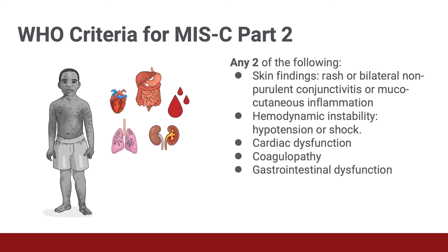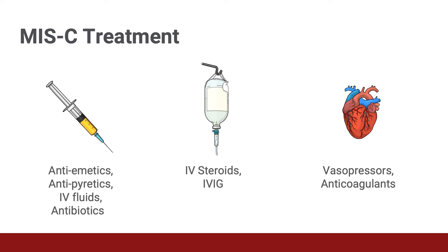Once diagnosed with MIS-C, patients should be hospitalized. Remember that MIS-C and COVID can mimic other common infections in children, so treat empirically for those if the diagnosis is unclear. With signs of sepsis, strongly consider initiating broad spectrum antibiotics. There are two main medications directed at treating MIS-C: IV steroids and IVIG. The most common steroid used is solumedrol, dosed at two milligrams per kg, but doses up to 30 milligrams per kg have been used in severe cases. IVIG is dosed at two grams per kilogram.